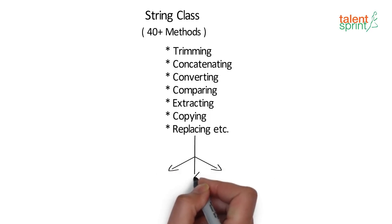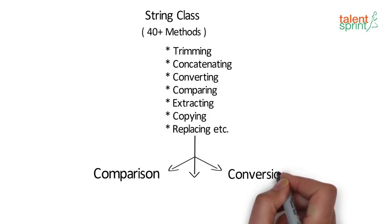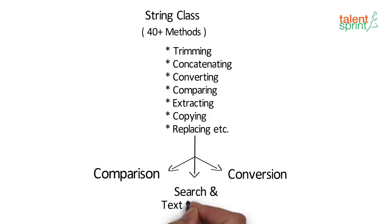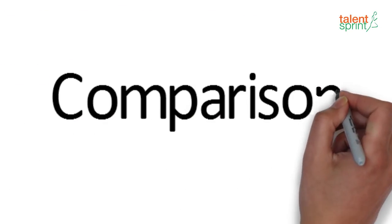There are three broad categories we can classify all these methods into: comparison, conversion, and search and text processing. Let's take a look at some of the methods in these categories one by one.